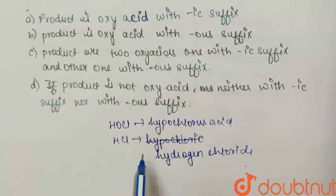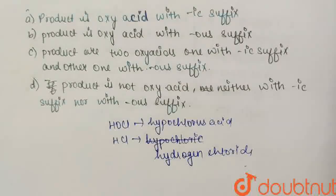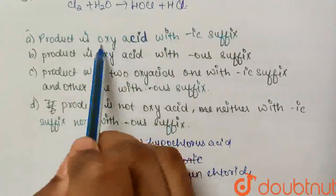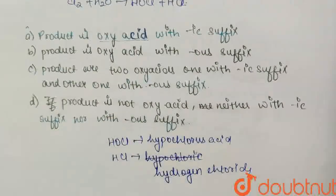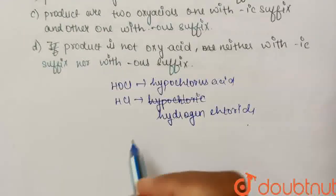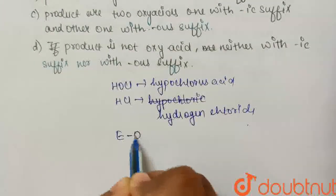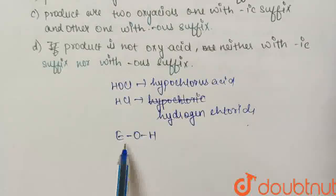And we need to know whether the product is oxy acid. So we know how the general form of oxy acid is. Suppose, let's say E-O-H. If our acid is in this form, we call it oxy acid.